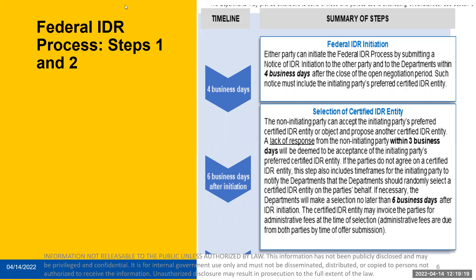The location of where the items and services were furnished is required to be provided on the notice of IDR initiation form. Information on the QPA, which only applies if a specified state law or all-payer model agreement doesn't apply, must also be provided. If parties dispute the applicability of the IDR process, they'll provide the certified IDR entity with information disputing that the claims are eligible with their notice of selection or failure to select a certified IDR entity. This information will help IDREs determine if an all-payer model agreement or specified state law applies and therefore the federal IDR process would not apply.